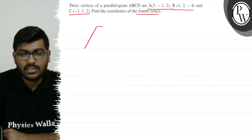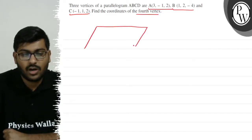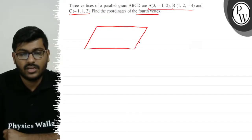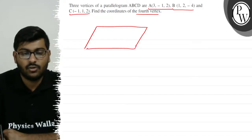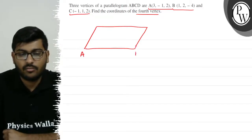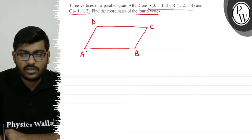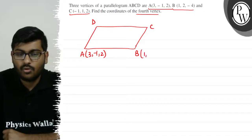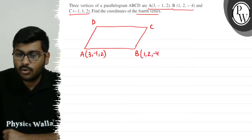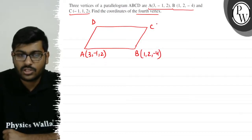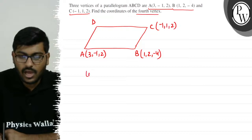So basically, we have a parallelogram ABCD. We are given: A has coordinates (3, -1, 2), B has coordinates (1, 2, -4), and C has coordinates (-1, 1, 2).